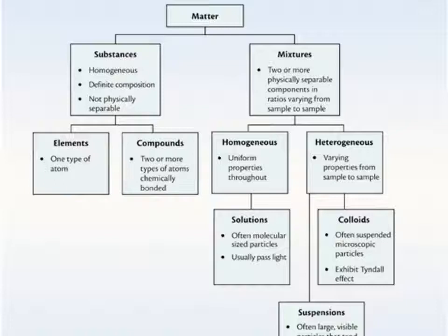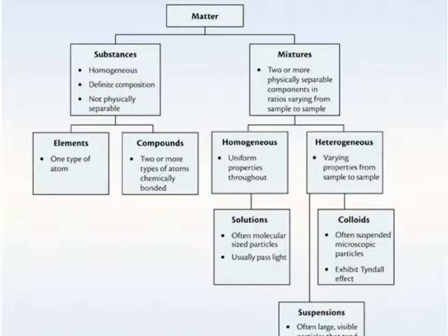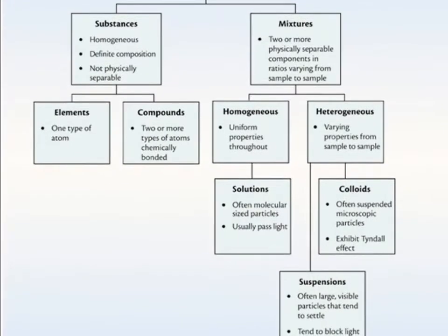To sum up, going back to the flowchart: all matter can be divided into one of two big categories. It's either a substance that we can write a chemical formula for, or a mixture that we can't write a set chemical formula for. A substance has a definite, defined composition; a mixture has an undefined composition. A substance can't be physically separated — it would have to be chemically separated — while a mixture can be physically separated, sometimes not easily, but still possible. And that is the difference between mixtures and substances.